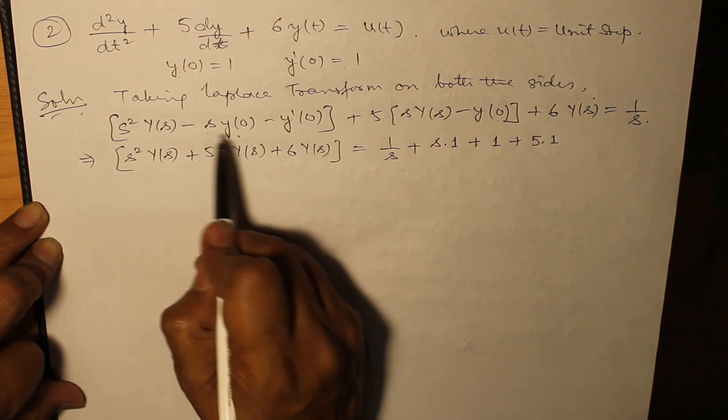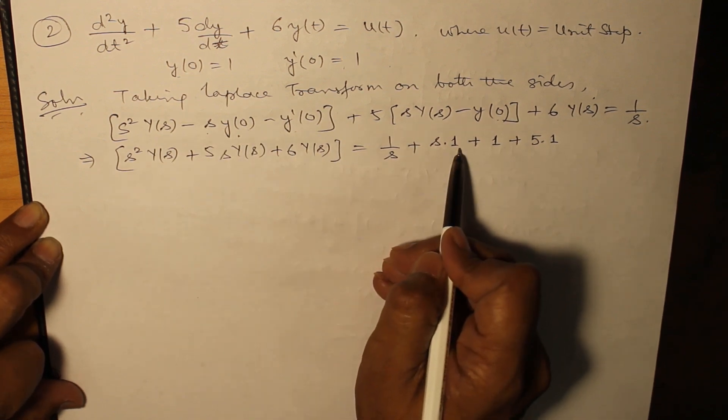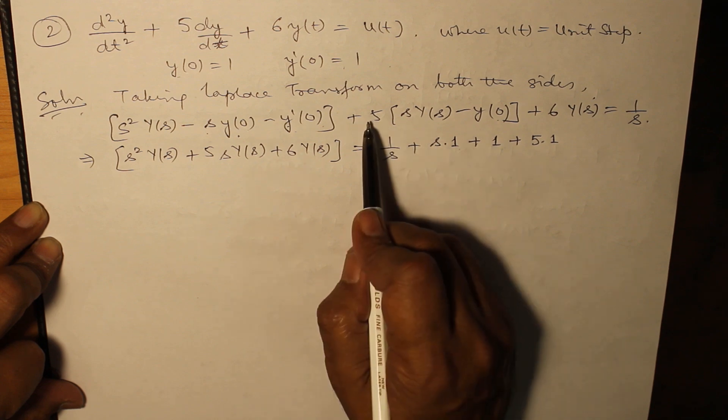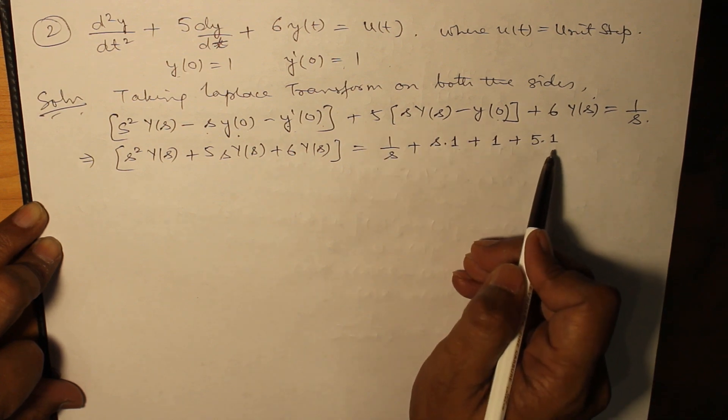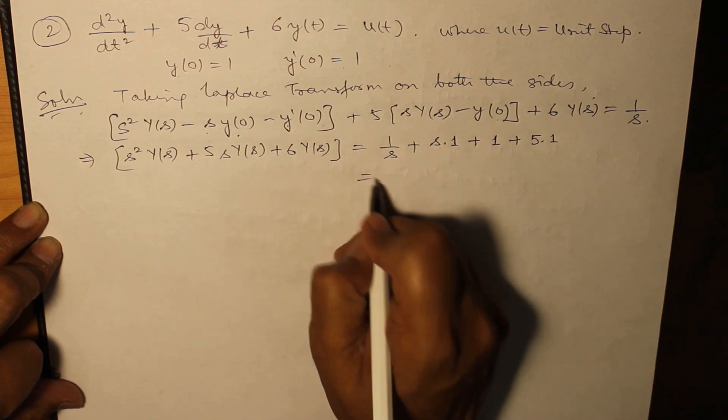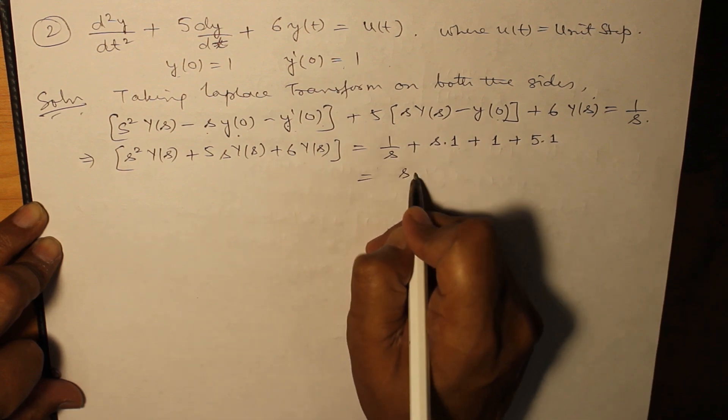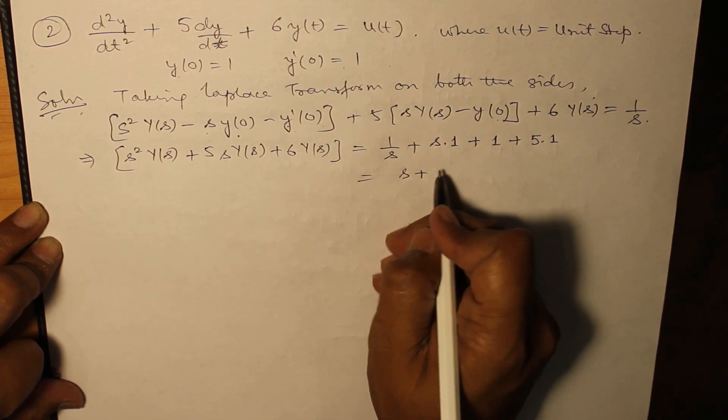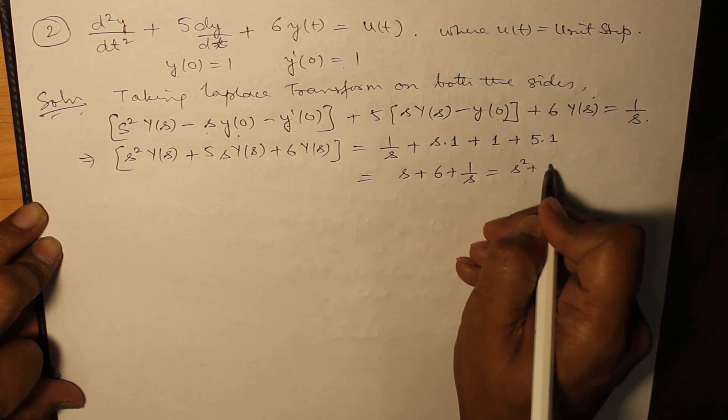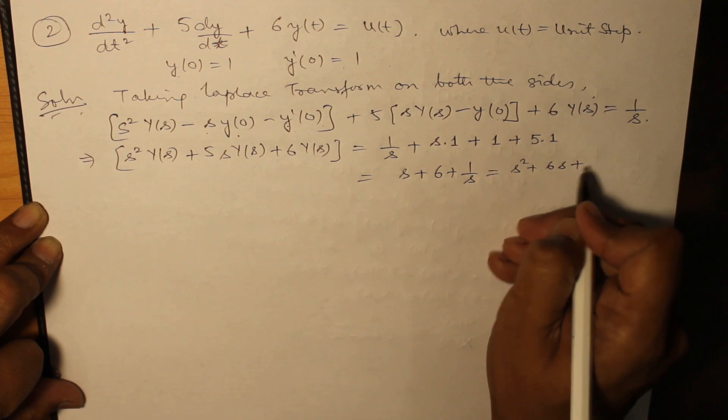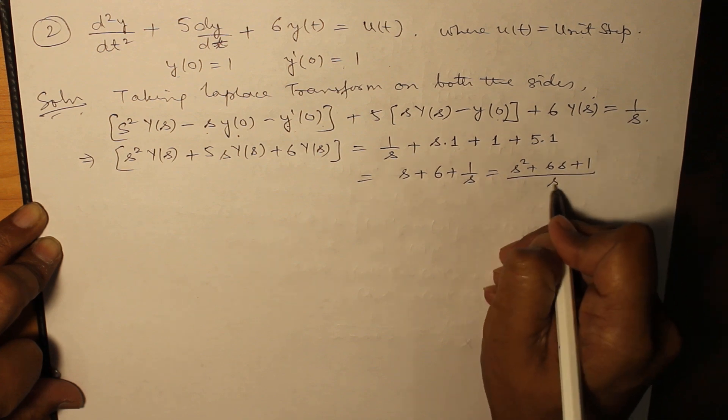Substituting the values of y(0) here and here, y'(0) here, we have brought the term sy(0) so s·1, y'(0) that is 1, and -5y(0) which becomes here 5·1, so this gives you s + 6 + 1/s which is (s² + 6s + 1)/s.